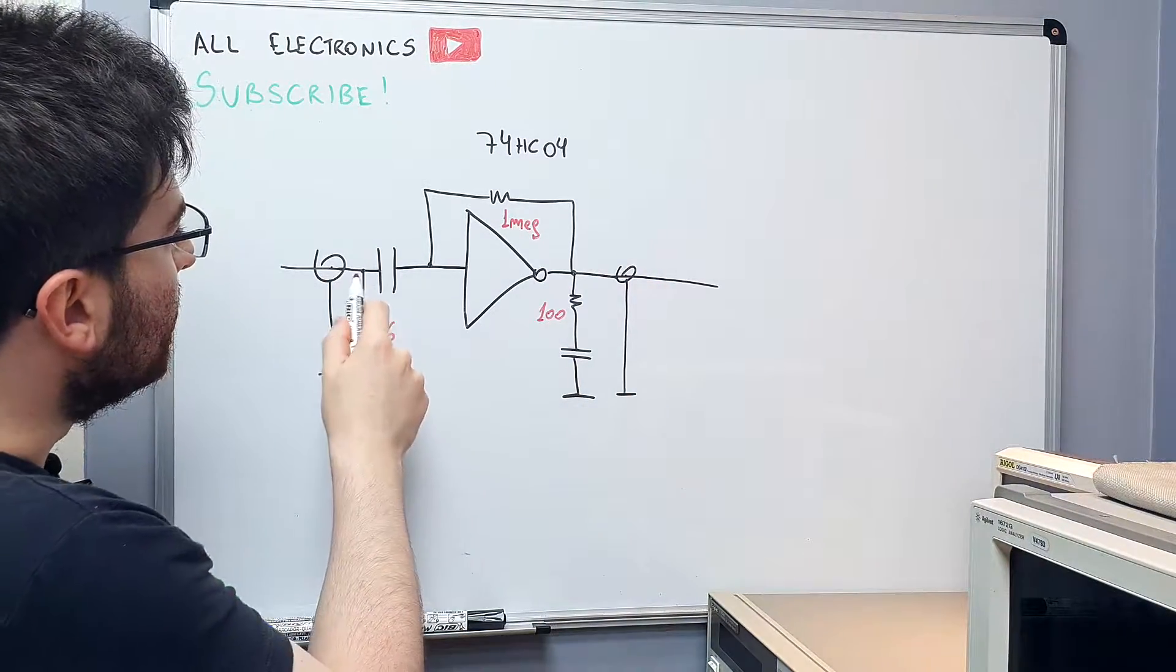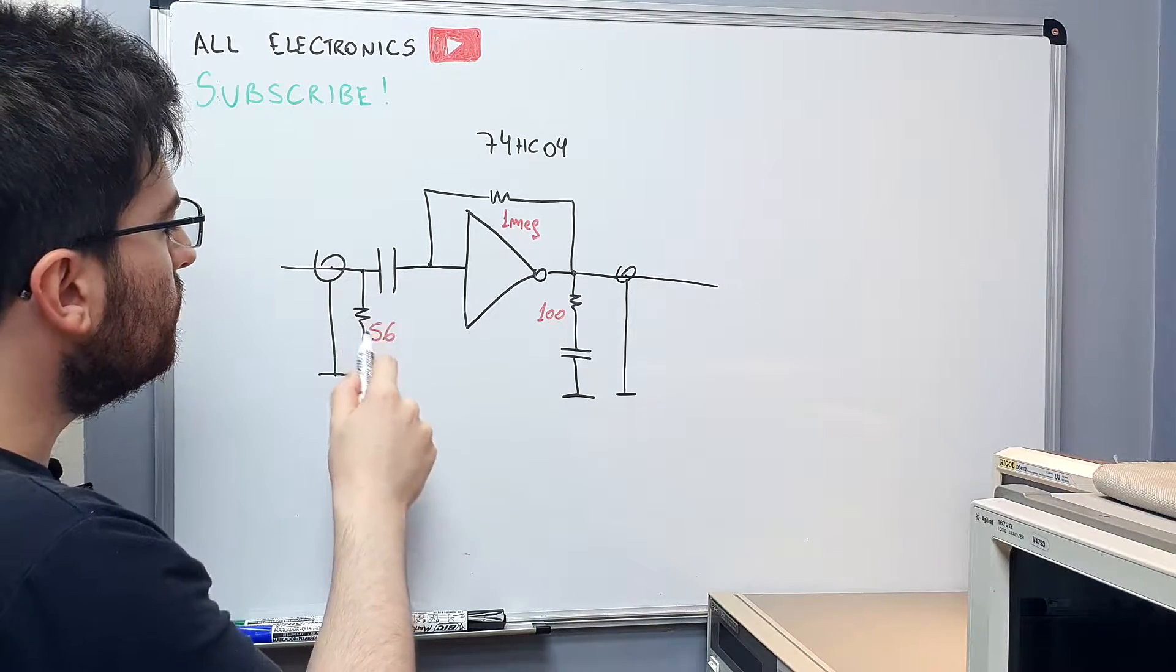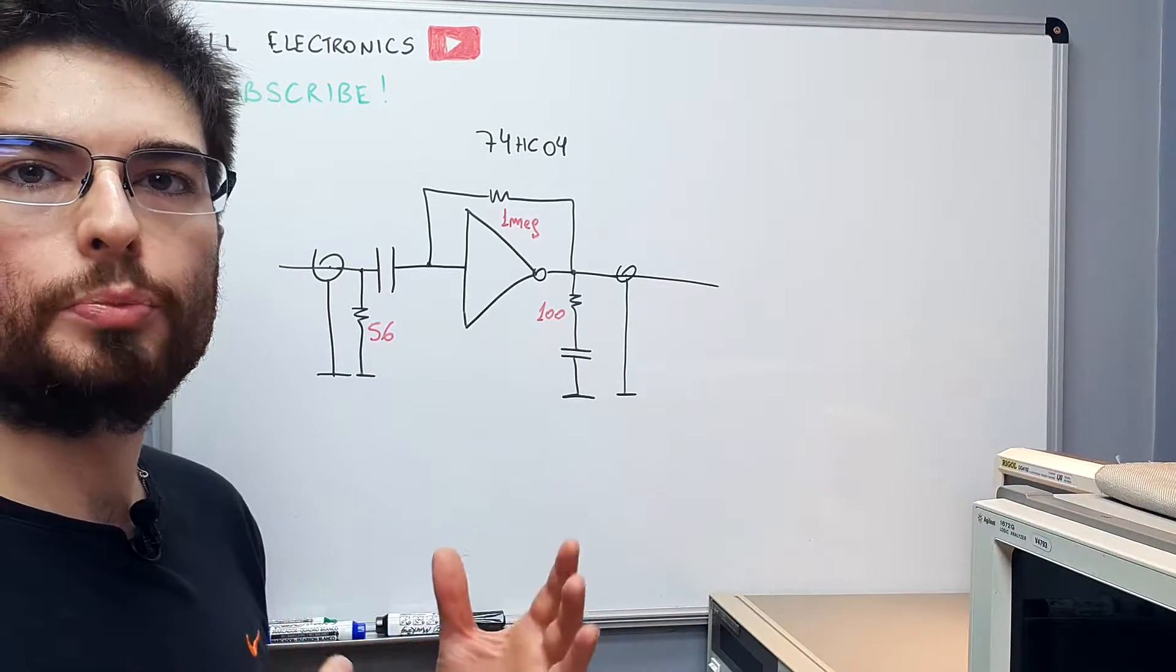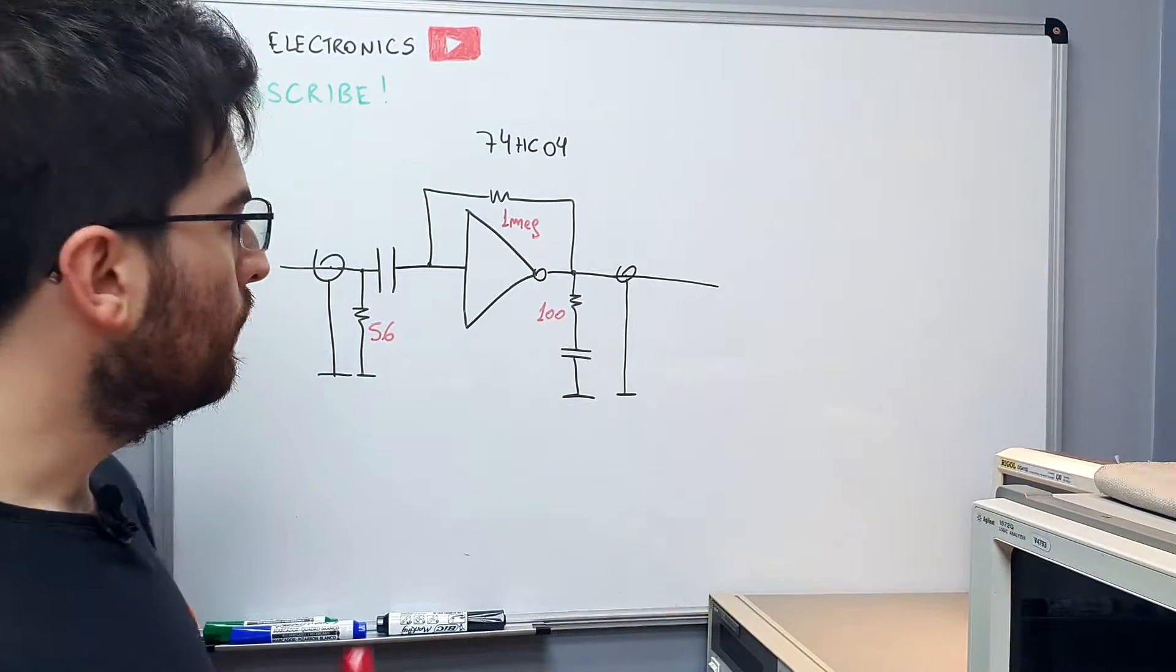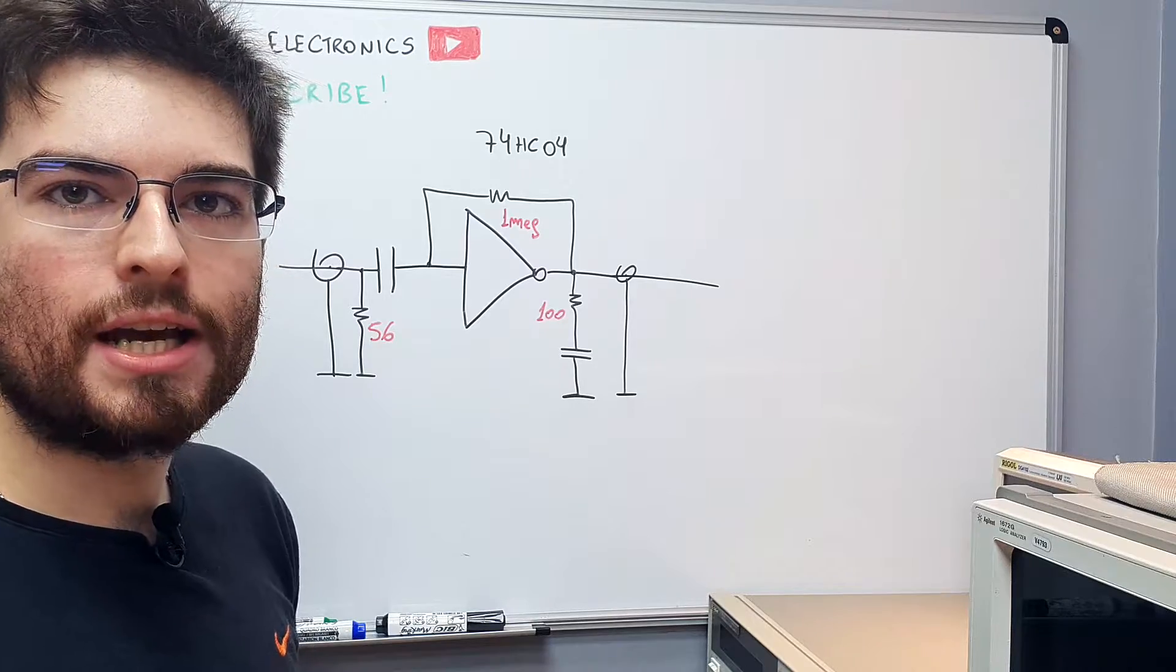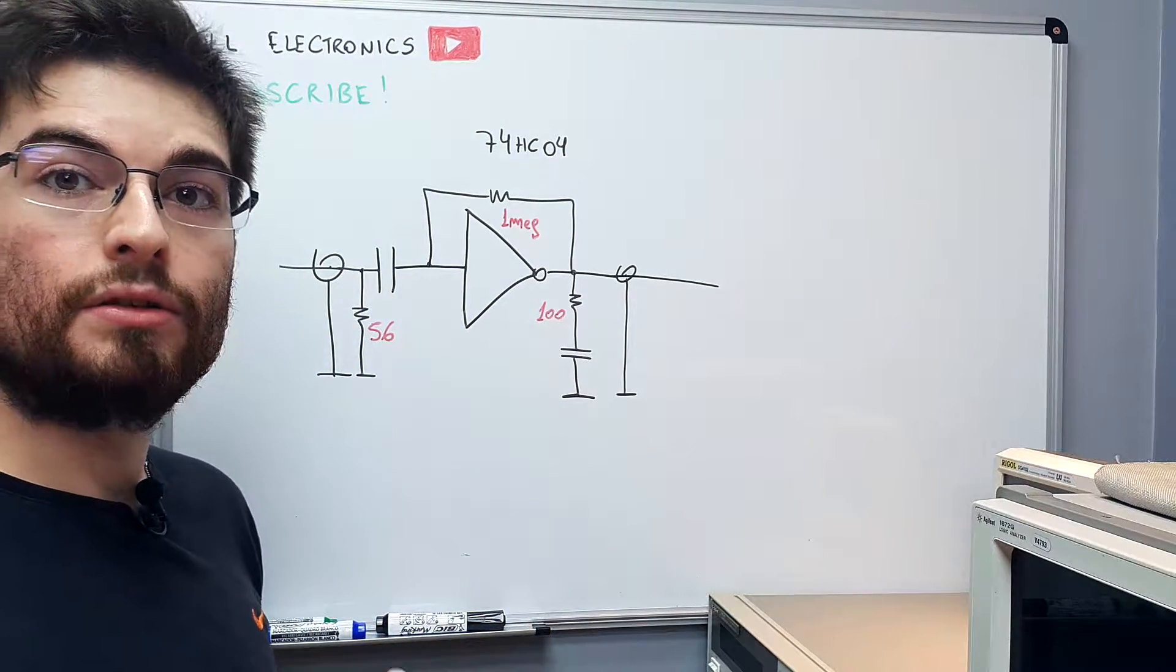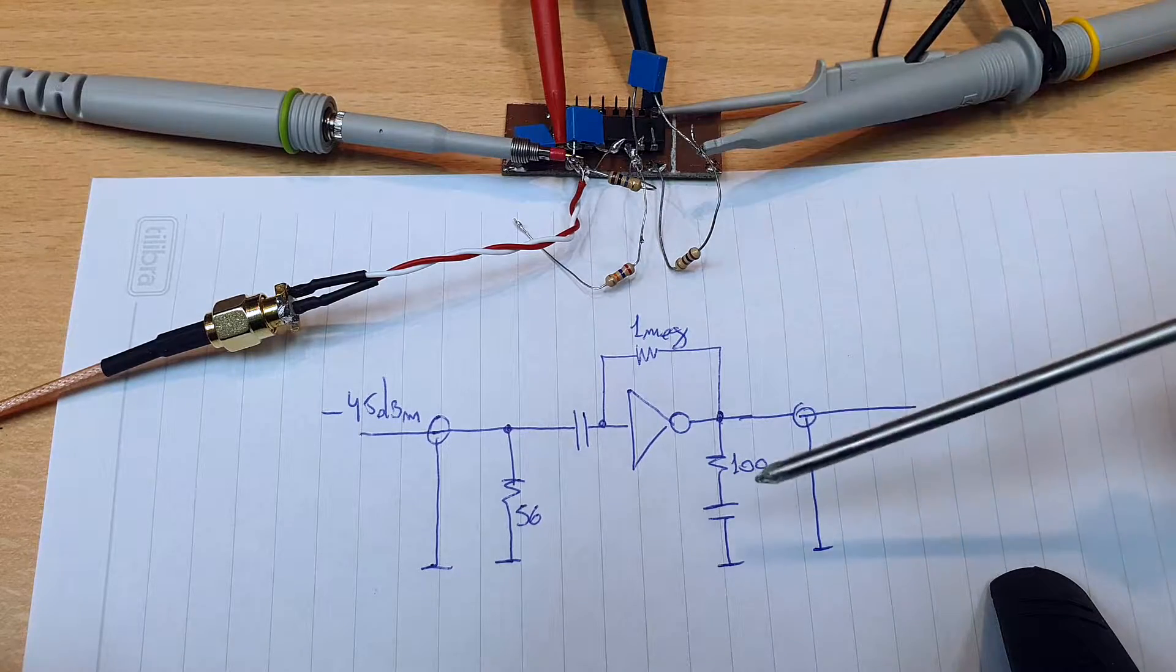And we have an AC coupling on the input with a 56 ohm resistor here to match with the transmission line that comes from the generator. This will generate the maximum output gain possible from this stage here with this load here. Let's see if it works on the bench and we will come here to see how we can use this arrangement with a feedback loop around to get the gain to a precise level. This is the circuit that we're gonna test now.